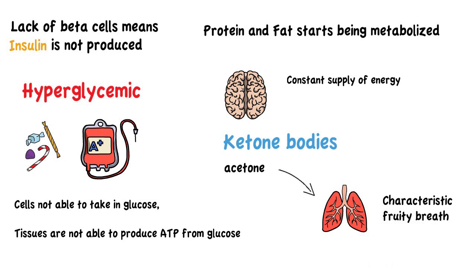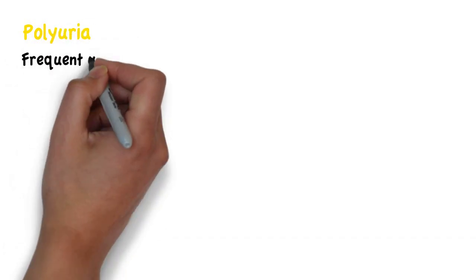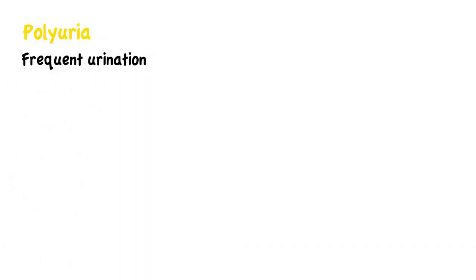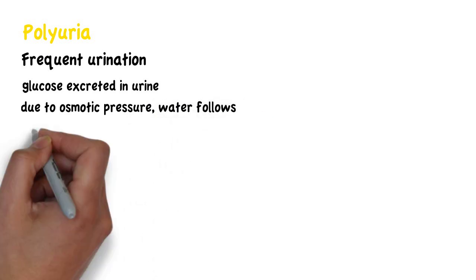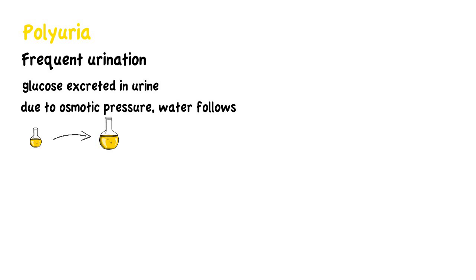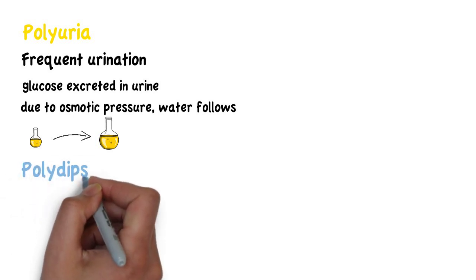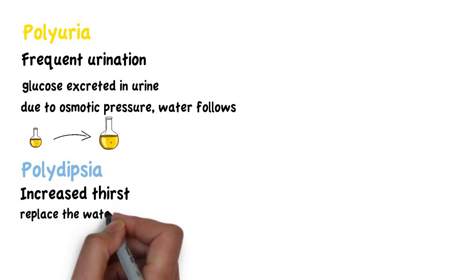Patients with type 1 diabetes will present with polyuria, which means frequent urination. Glucose levels are so high that it is excreted in urine, and due to the osmotic pressure, water follows, so there is an increase in urine output. Due to the increased amount of water lost in urine, patients also present with polydipsia, which stands for increased thirst, in order to replace the water lost.